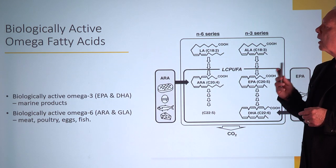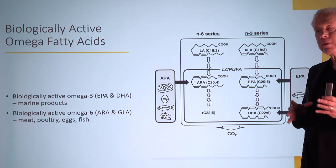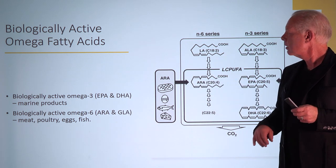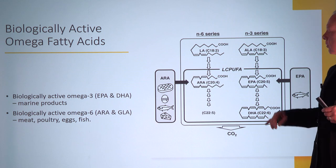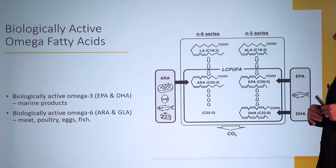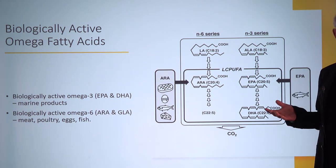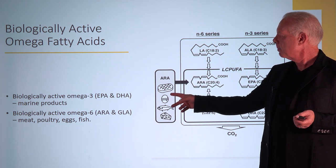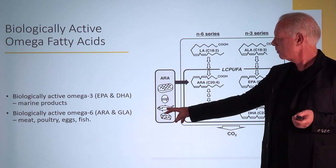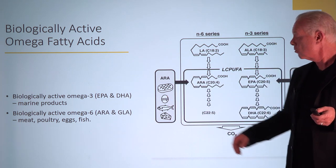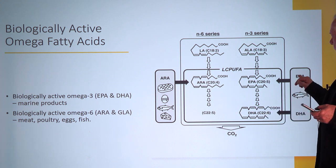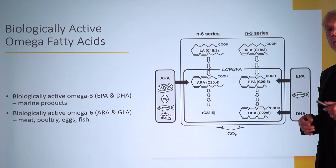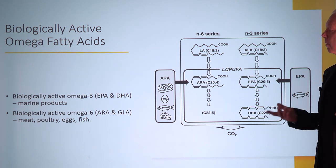The biologically active forms are arachidonic acid for the N6s, and EPA and DHA for the omega-3s. Arachidonic acid comes mainly from meat, eggs, poultry, and cheese, whereas EPA and DHA come primarily from fish and marine-sourced animals.